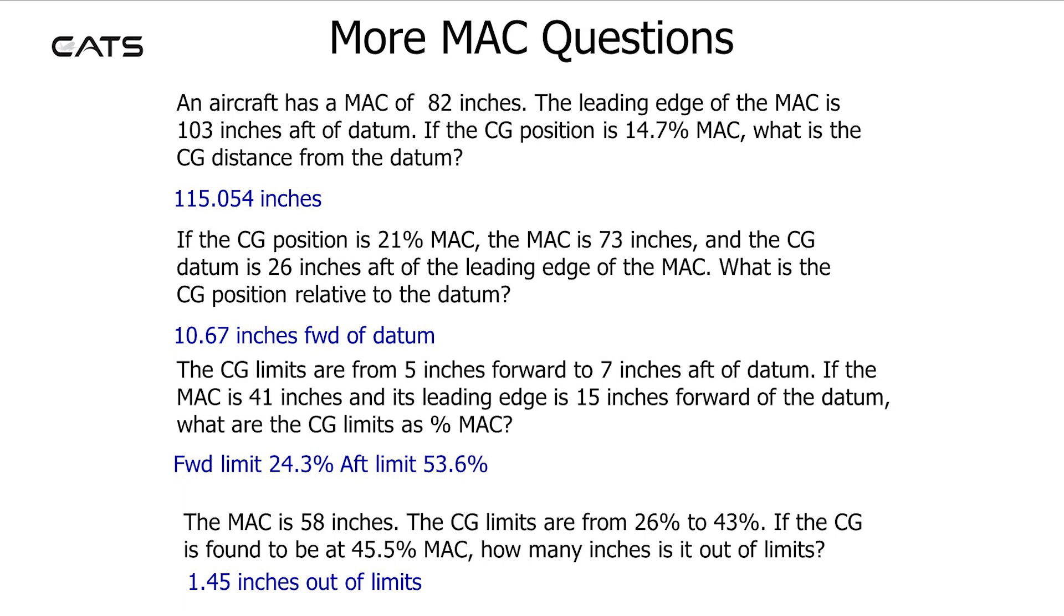The CG limits are from 5 inches forward to 7 inches aft of datum. If the MAC is 41 inches and its leading edge is 15 inches forward of the datum, what are the CG limits as percentage MAC? The forward limit is 24.3% and the aft limit is 53.6%.